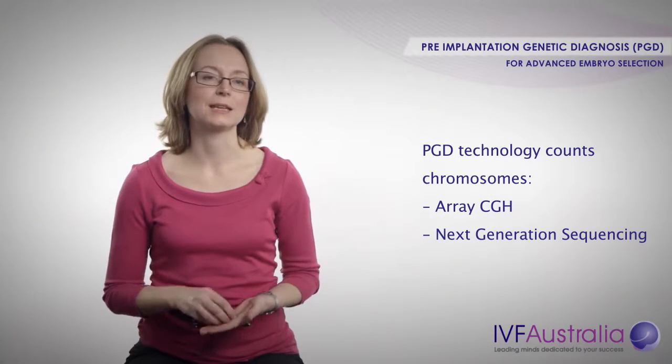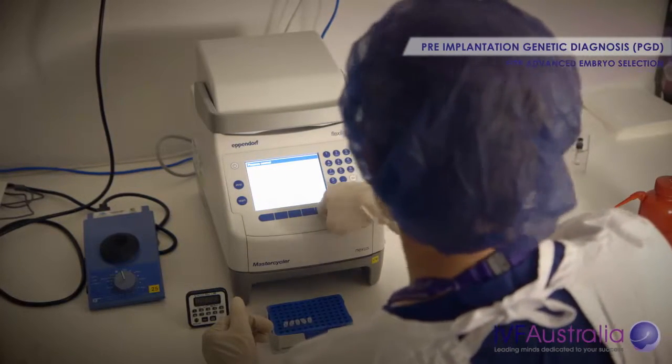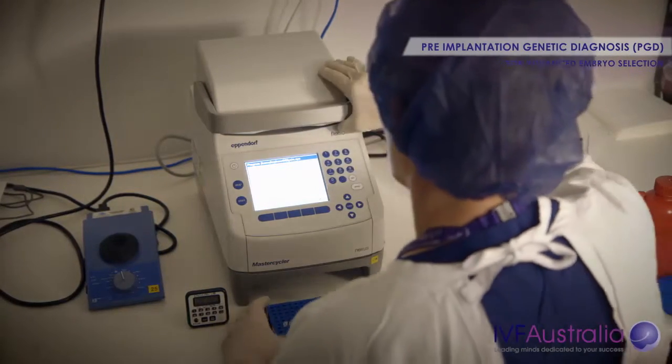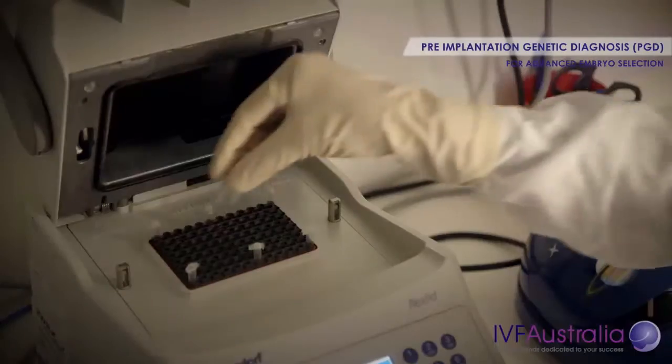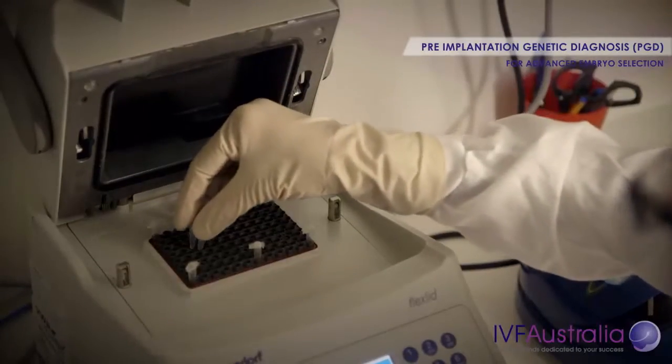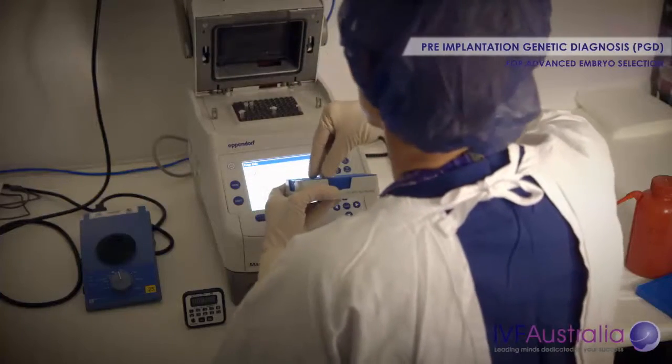With both of these technologies, they start by obtaining a small sample of cells from an embryo and amplifying the DNA inside these cells — copying the DNA to create many thousands of copies. With ArrayCGH, that amplified DNA is then compared with male and female DNA of normal copy number and applied to a microarray slide.